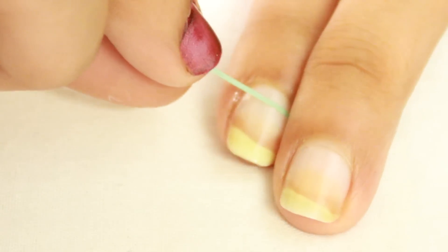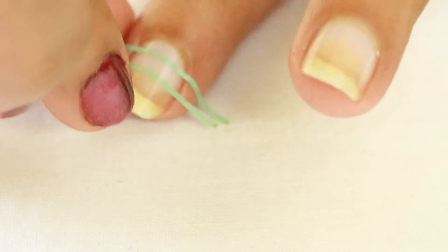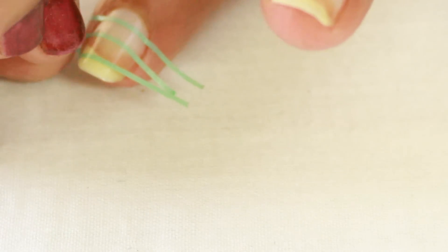Now for the first design, place three striping tapes horizontally. Apply a double coat of black nail polish. By the time it dries, let's paint the other nails.